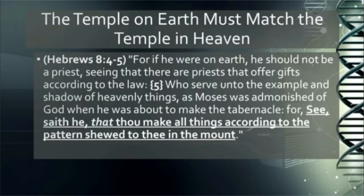According to the scriptures, what is in the earth, as far as how God does things, must match what is in heaven. This is what he told Moses — Hebrews chapter 8 verse 4: 'For if he were on the earth, he should not be a priest, seeing that there are priests that offer gifts according to the law, who serve unto the example and shadow of heavenly things. As Moses was admonished of God when he was about to make the tabernacle — for see, saith he,' meaning God, 'that thou make all things according to the pattern showed to thee in the mount.'